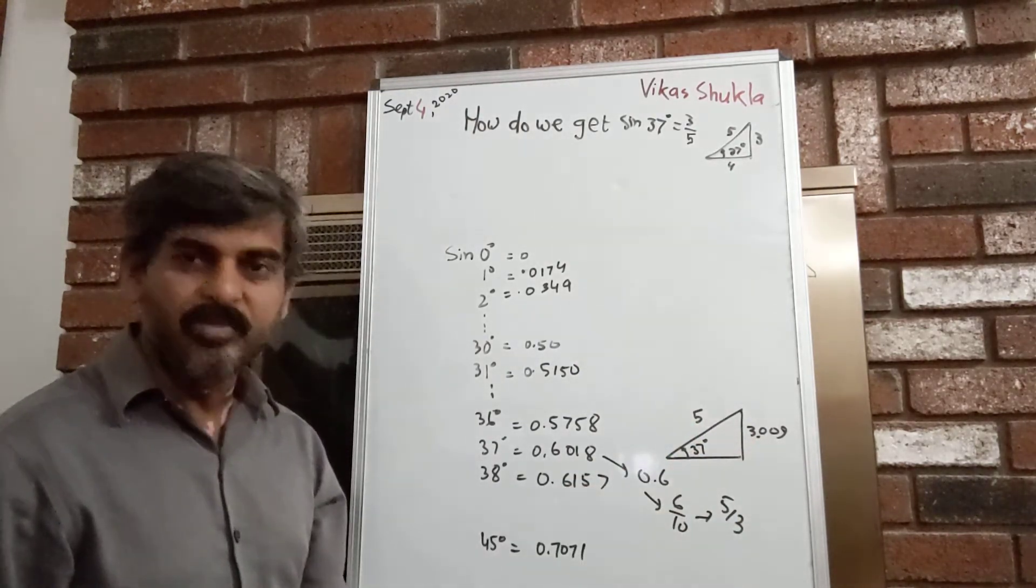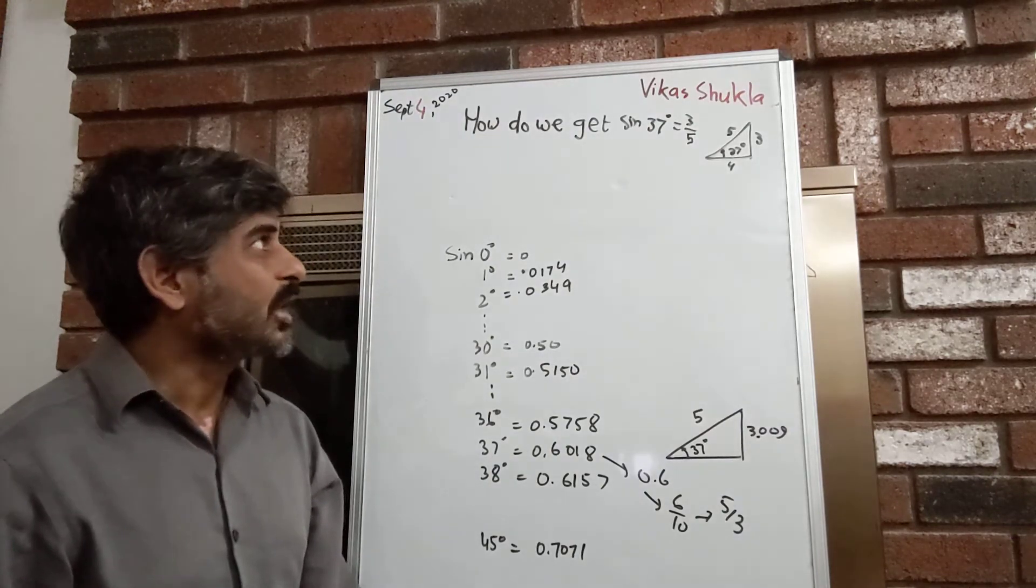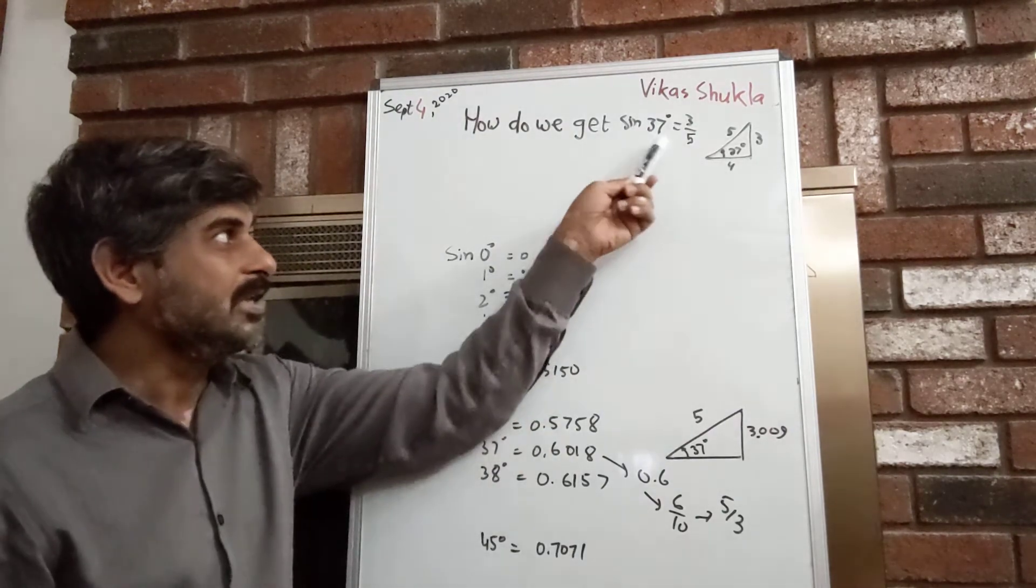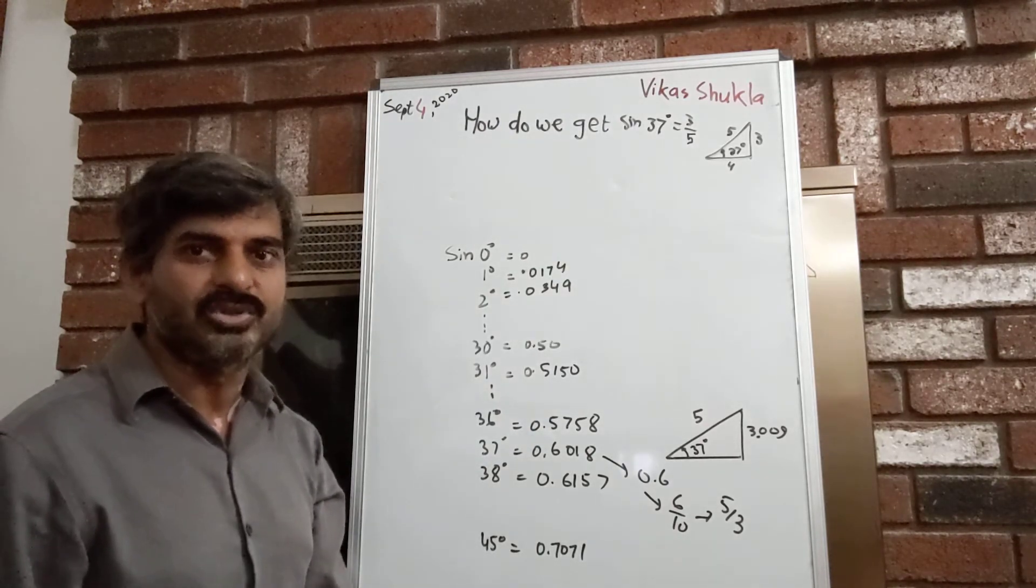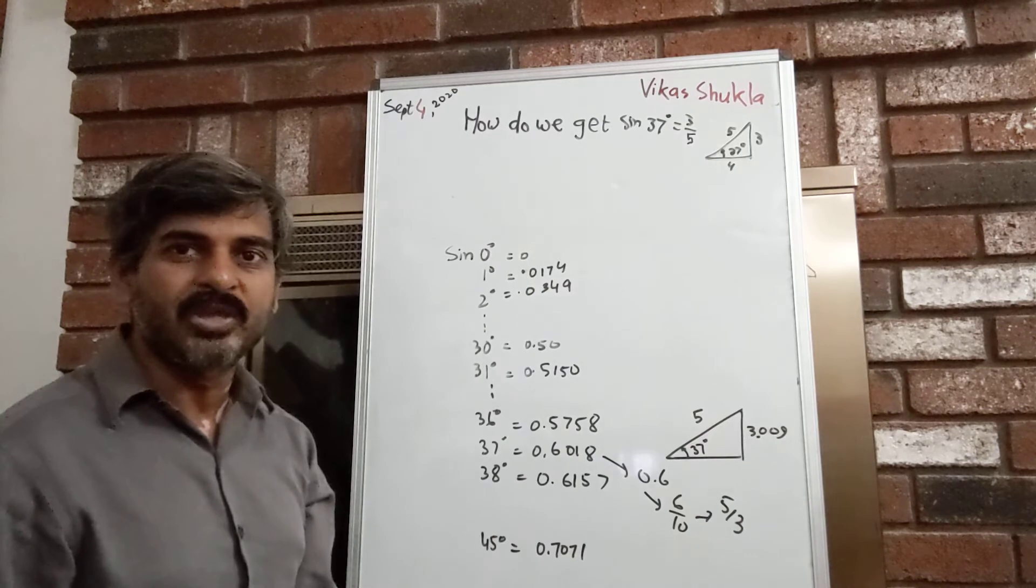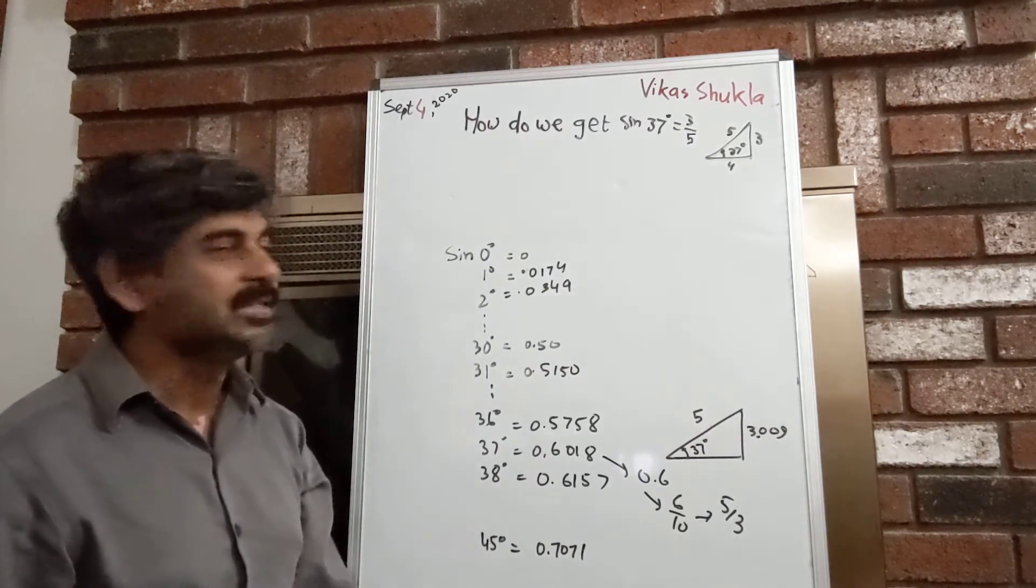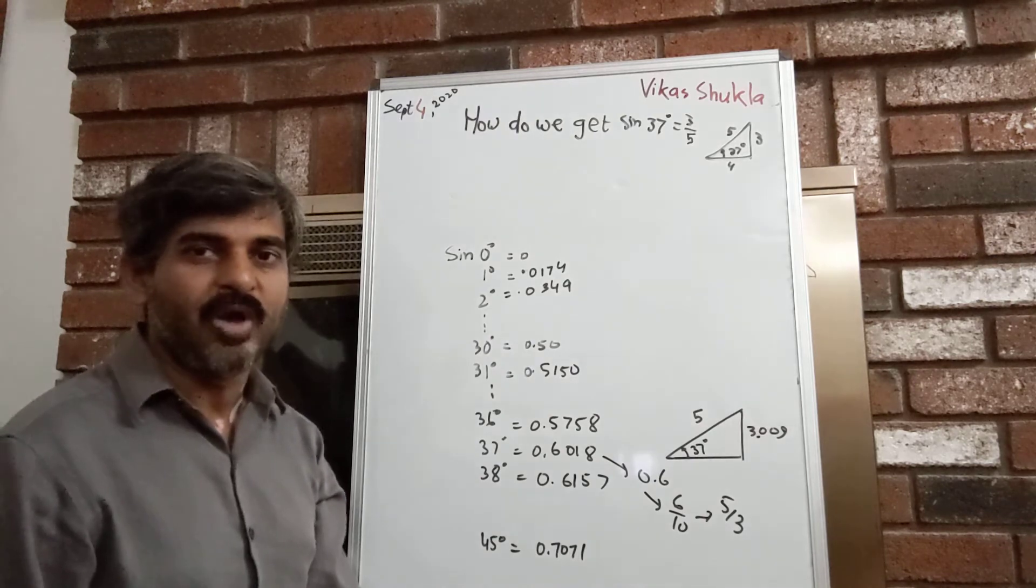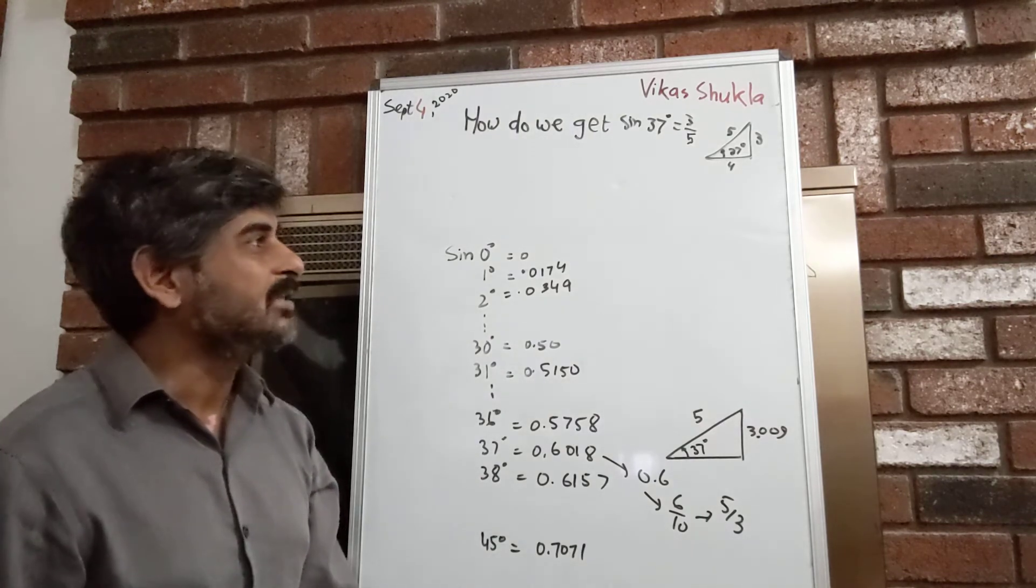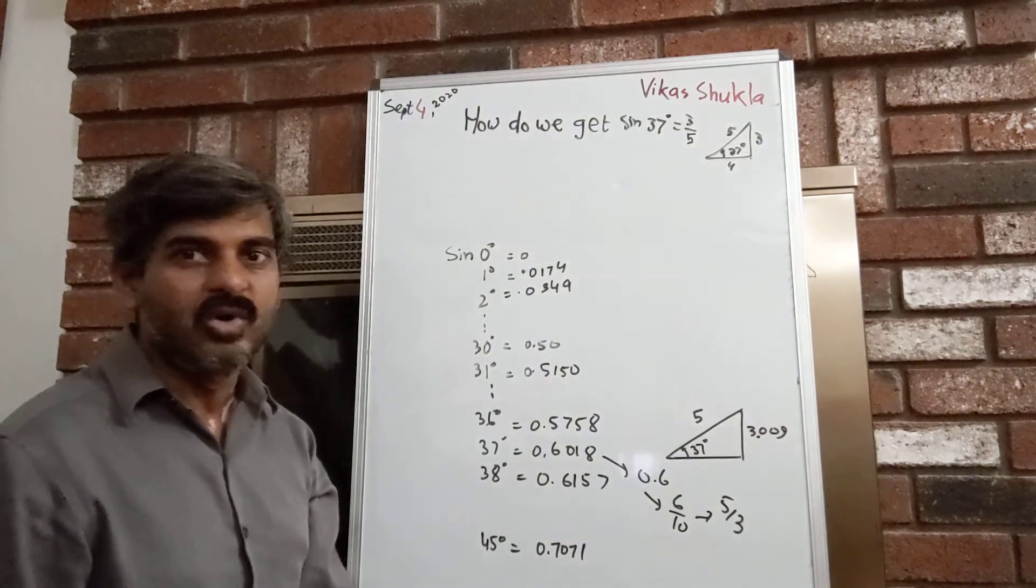So again, sine 37° is not exactly equal to 3/5, but very close to 3/5. The same thing is true for cosine 37°—it's not exactly 4/5, but approximately equal to 4/5.